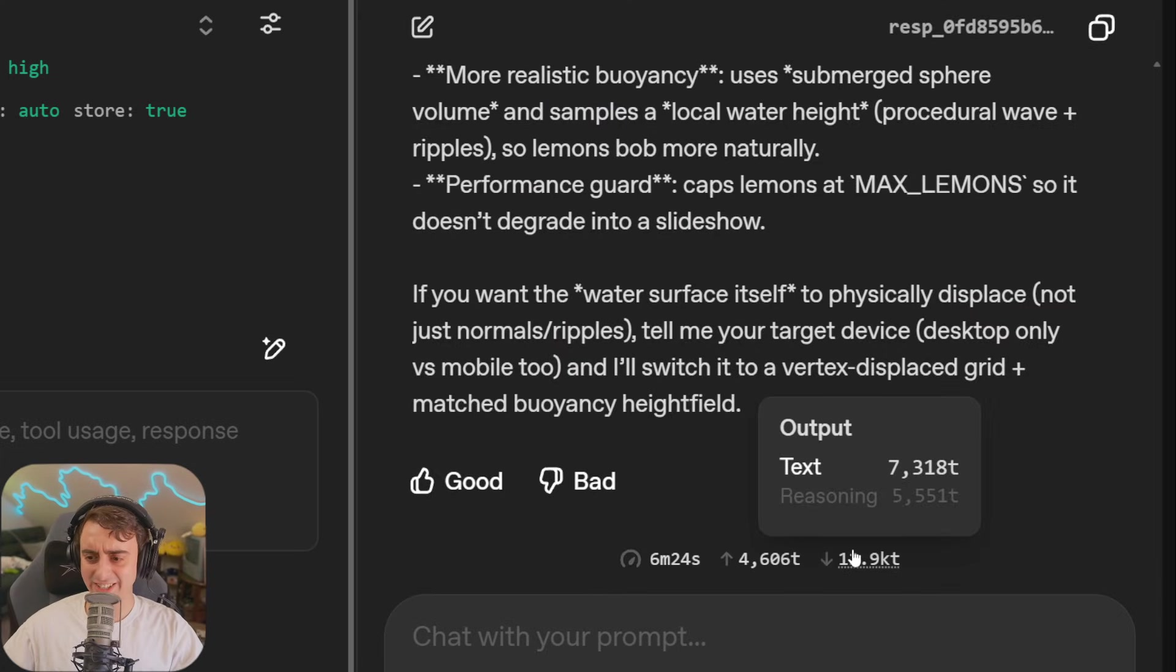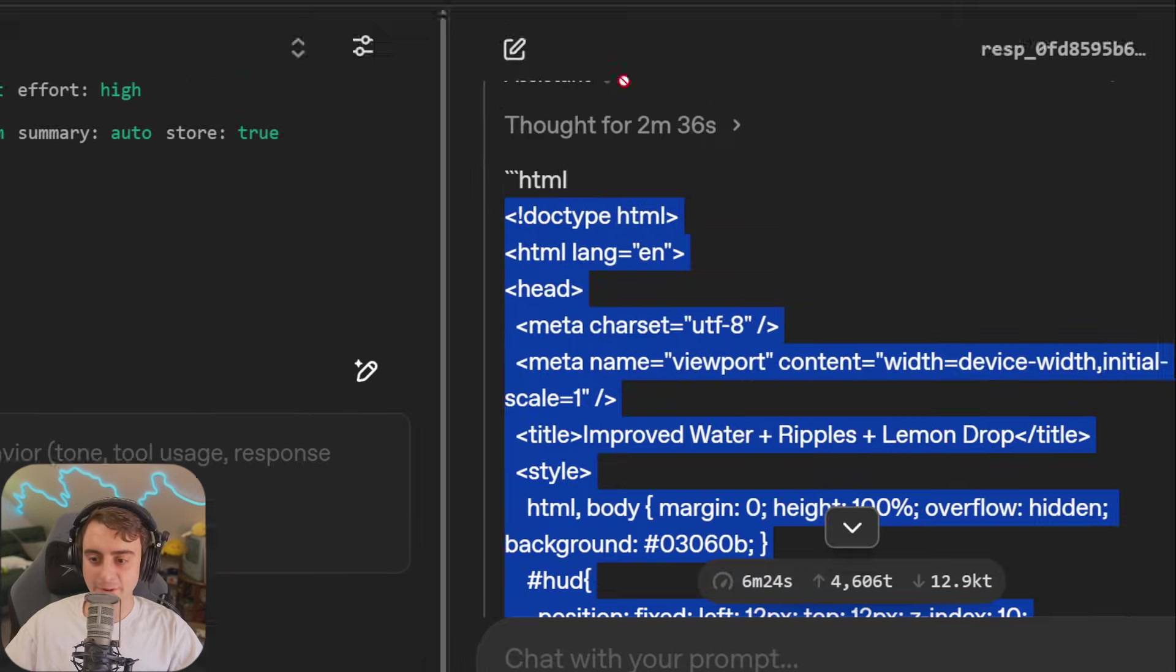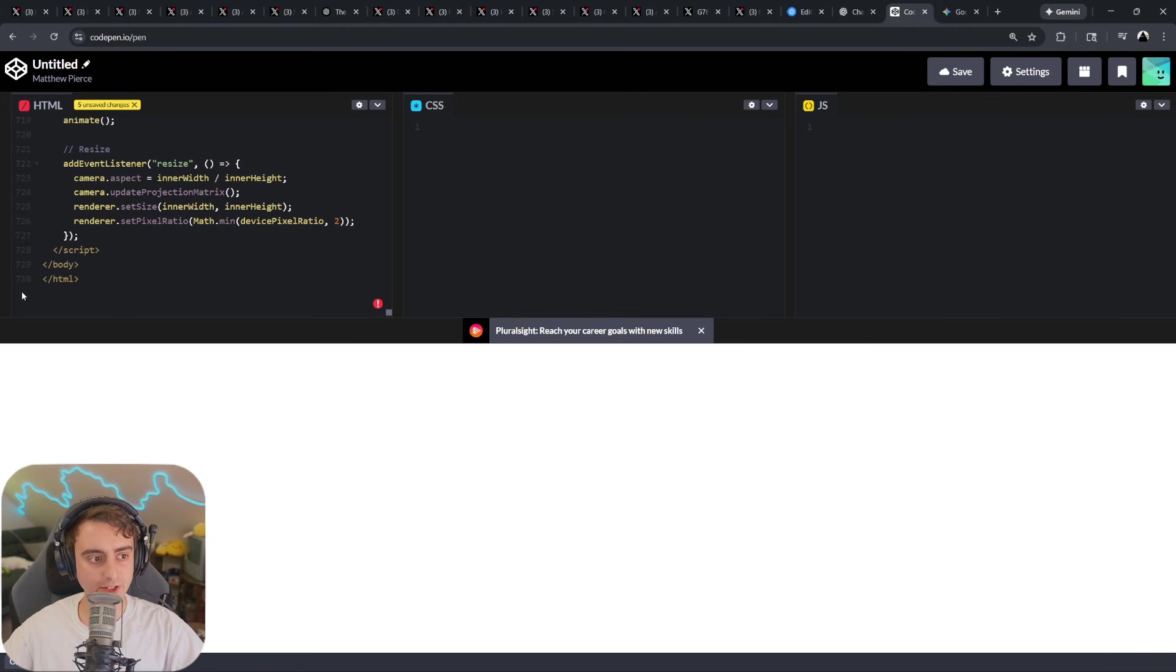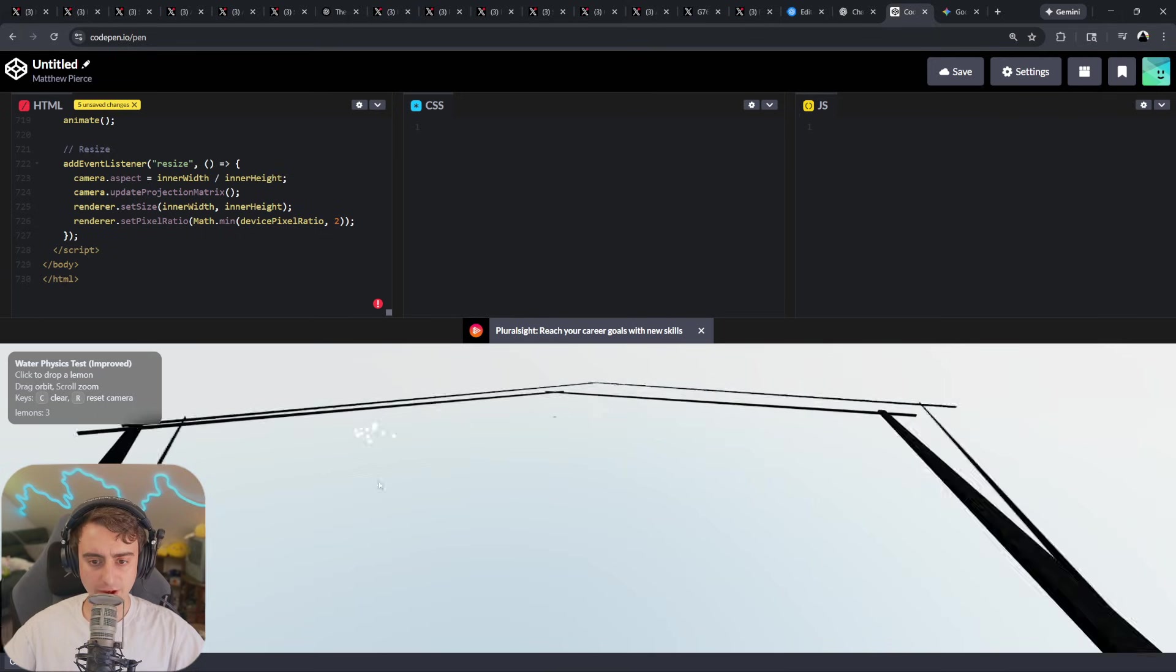Oh my gosh. That was 7,000 output tokens with over 5,000 reasoning tokens. All right. That looks insane. Now, what does it look like pasted into CodePen? Okay, 730 lines, and there we go. We now have walls, and we can actually zoom in to see our lemons fall into the water.